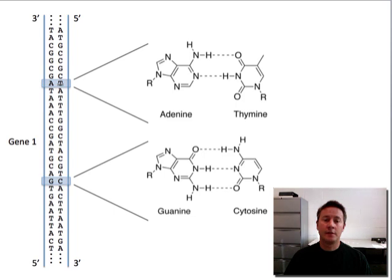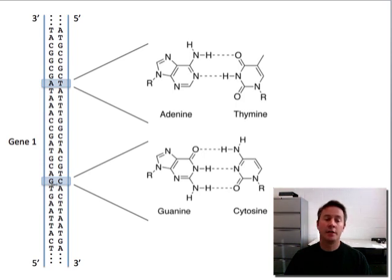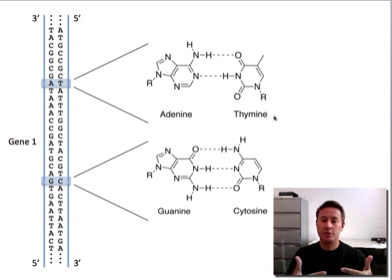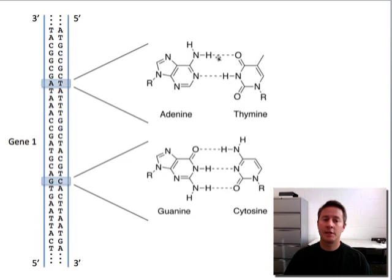A always pairs with T. A is short for adenine and T is short for thymine, and anytime you have an A on one strand you know that there's going to be a T at that position on the complementary strand. And G pairs with C — G is short for guanine and C for cytosine. The reason A pairs with T and G pairs with C is that these ring-shaped molecules are able to form hydrogen bonds with one another. A paired with T forms two hydrogen bonds, and G forms three hydrogen bonds with C. Here's the AT base pair with dashed lines representing the hydrogen bonds between these two molecules.